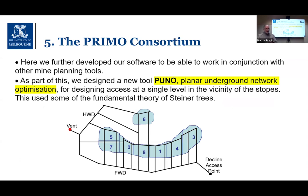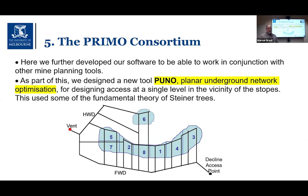As part of PRIMO, we also designed a new tool called PUNO — a Planar Underground Network Optimization tool. This looked at the design on each level in the vicinity of the stopes — the individual areas of the ore body being mined out. It was a nice piece of research that allowed us to use fundamental Steiner tree theory to develop a really nice algorithm for doing designs at these individual levels.